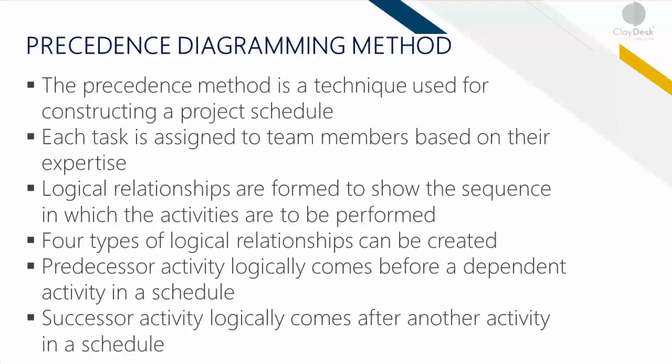PDM is a technique used for constructing a schedule model in which activities are represented by nodes and are graphically linked by one or more relationships to show the sequence in which the activities are performed. PDM includes four types of dependencies or logical relationships. The predecessor activity logically comes before a dependent activity in a schedule, and a successor activity logically comes after another activity.